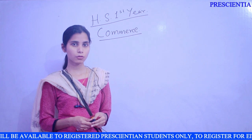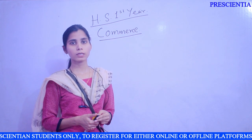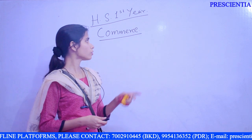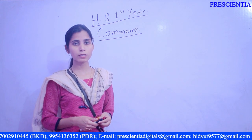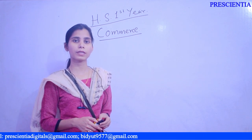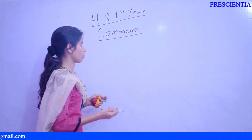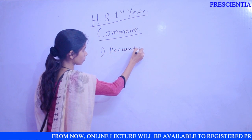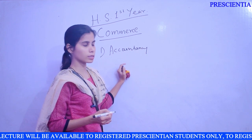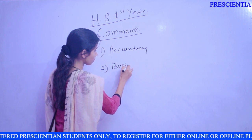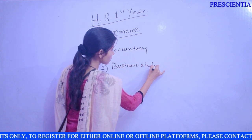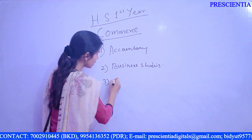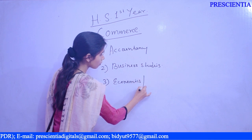In this video, first of all I would like to give a brief idea about the Commerce stream — what are the subjects and combinations you can have when you take admission in college in Commerce stream. The first subject you will have is Accountancy — this subject is compulsory. Number two is Business Studies — again it is compulsory. You must have these two subjects: Accountancy and Business Studies.